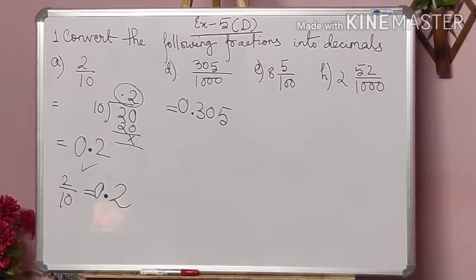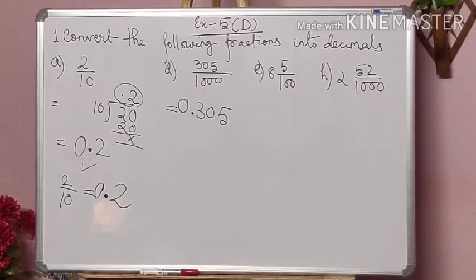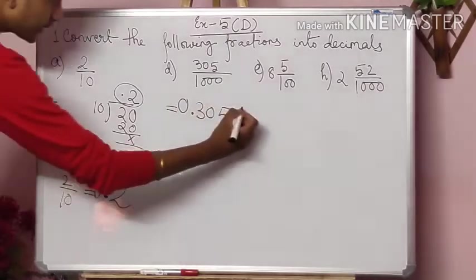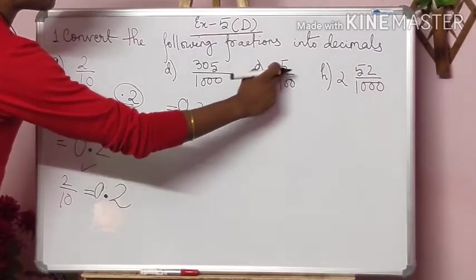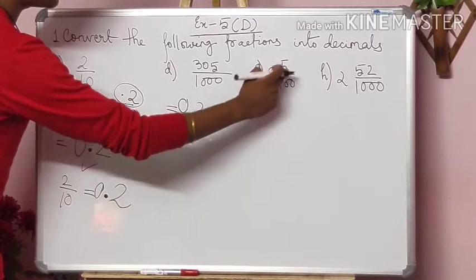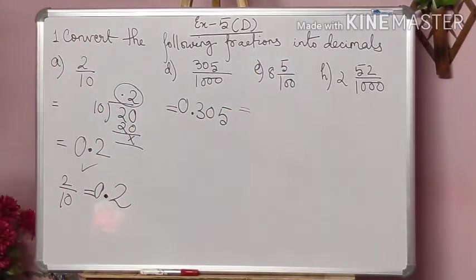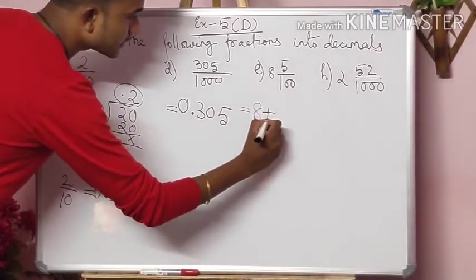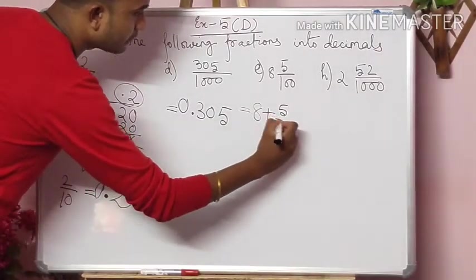In number E and number H, there is no big difference. Earlier it was simple fractions, but now there are mixed fractions — like those mixed fractions we got in earlier exercises. As I told you, in between the whole number and the fraction, there is always a plus sign, meaning they are in addition form. So just do like this: 8, we give a plus sign here and this can be written as 5 by 100.